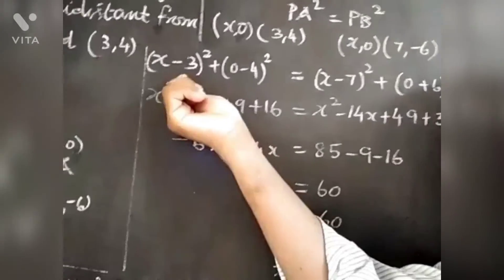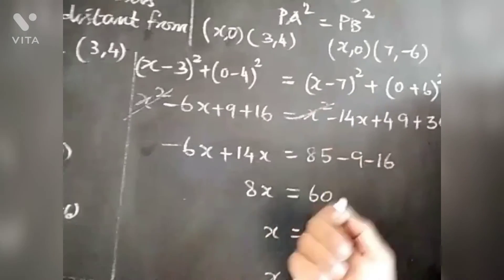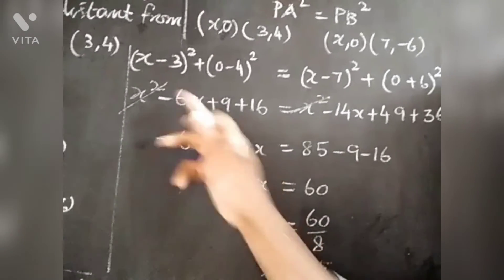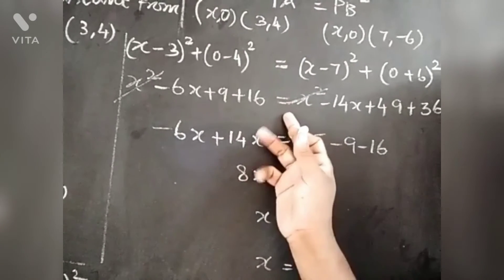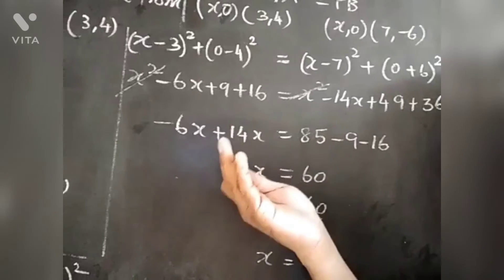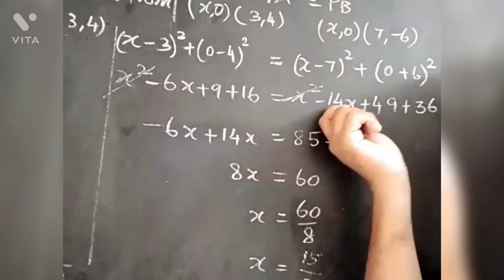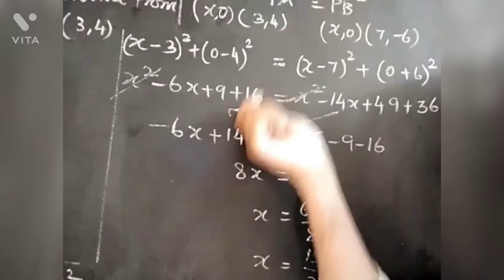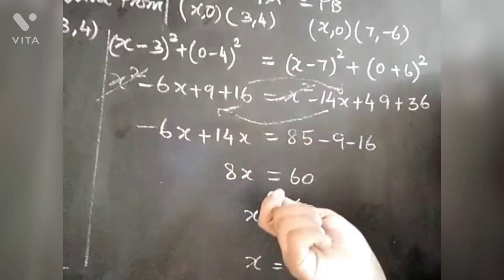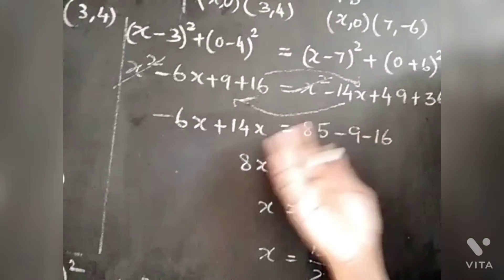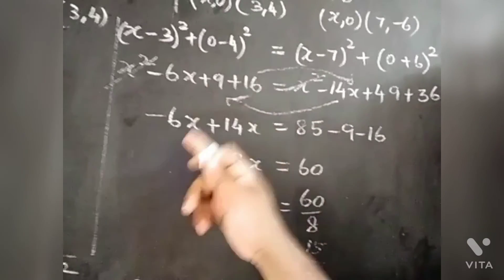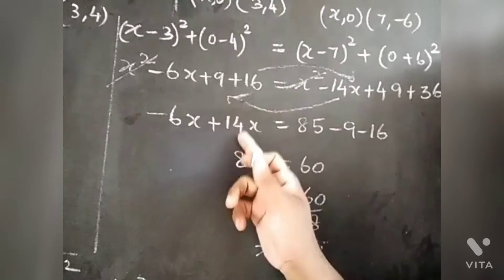Now x² is x² cancel on both sides. Then x² cancel. When we have variables, separate them. -6x - 14x, then plus 14x.